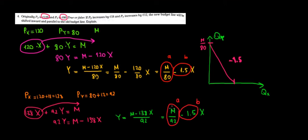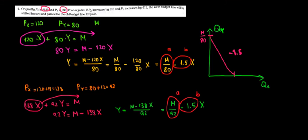And what's the intuition here? Let's see if that actually makes sense. Well, before Y cost 80 euros. When it costs 80 euros, of course we can buy more Y than when it costs 92 euros.